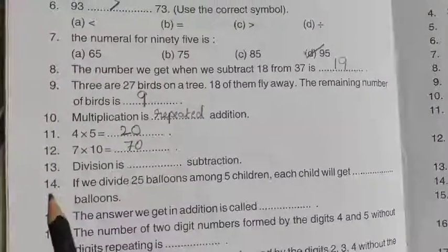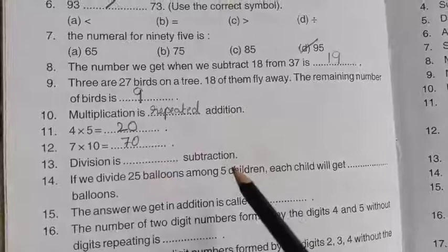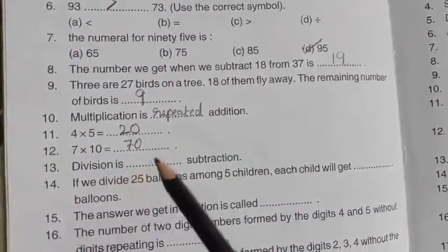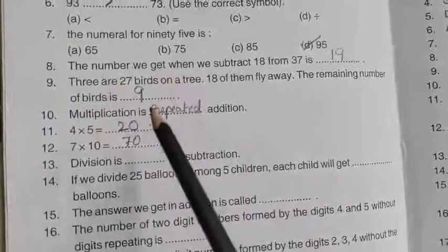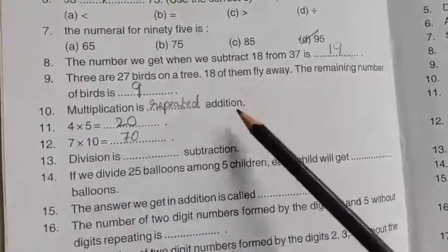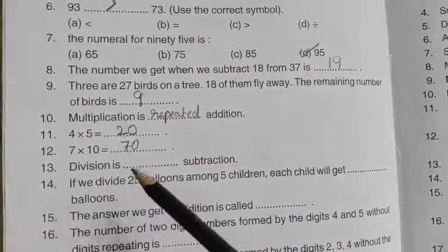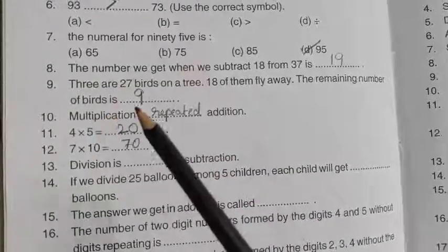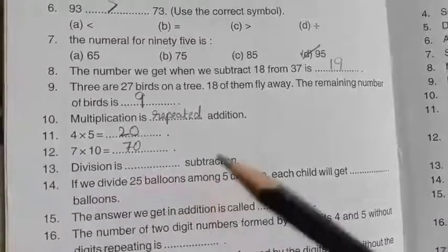Next, 13th one. Division is dash subtraction. Division is nothing but repeated subtraction. So multiplication is a repeated addition and division is repeated subtraction. Okay children, so multiplication is a repeated addition, division is a repeated subtraction.